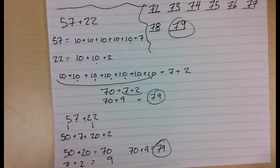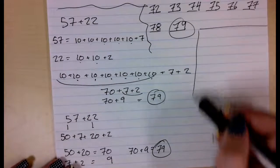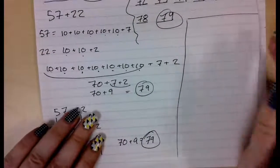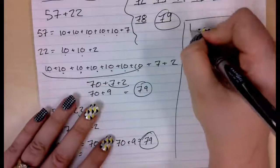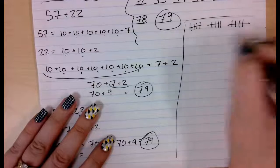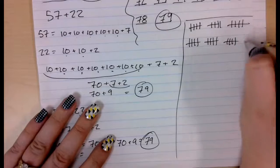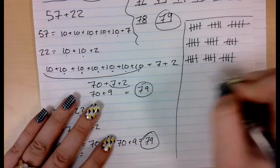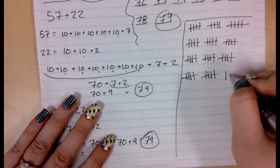Alright. Last one. And the reason why we don't use it very much. So, we're drawing tick marks. We're drawing 57. So, I'd have to draw 57 to start. 5, 10, 15, 20, 25, 30, 35, 40, 45, 50, 55, 56, 57. Now, I need to add 22.